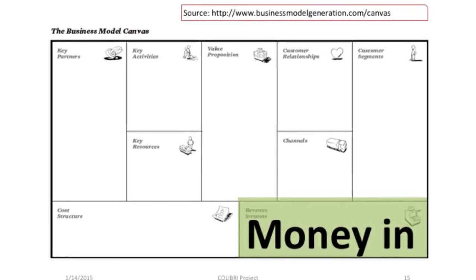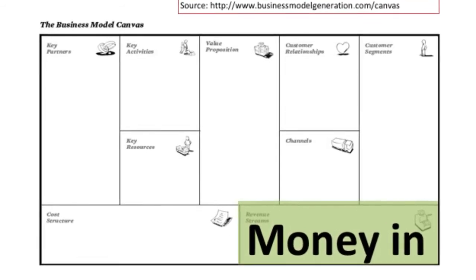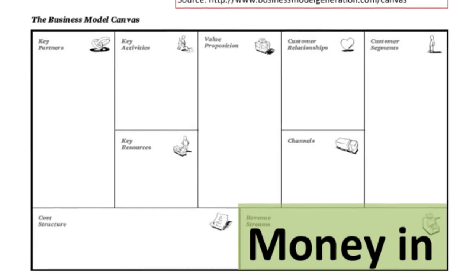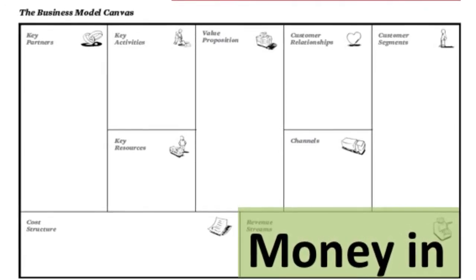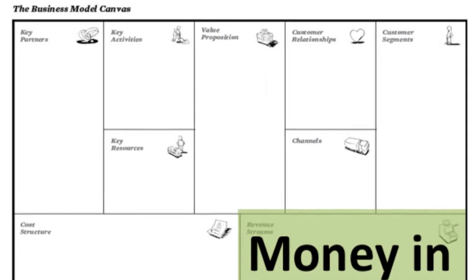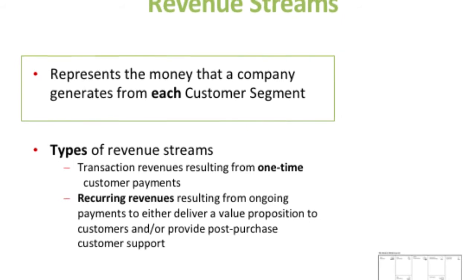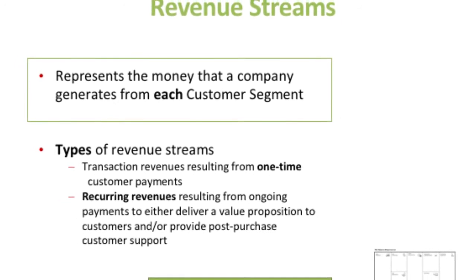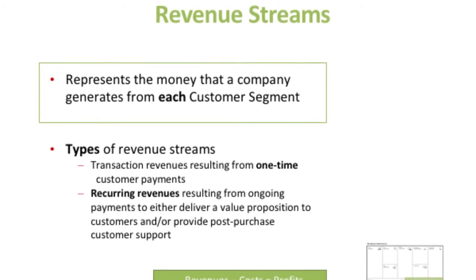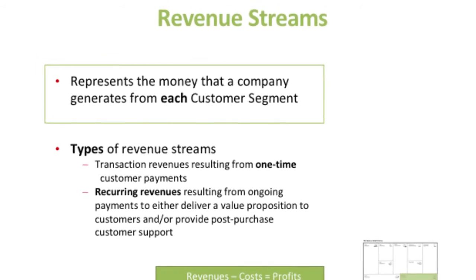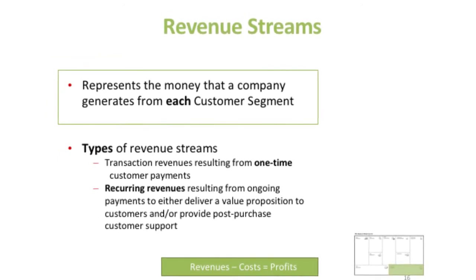Even if we have a nonprofit organization, there are costs to be covered. We need to know how we can get money, and how we can get money early enough to cover the costs. Revenue streams is of course the way to think about how and from whom we are getting what kind of money — is it one time, or is it recurring revenues where people are paying several times?